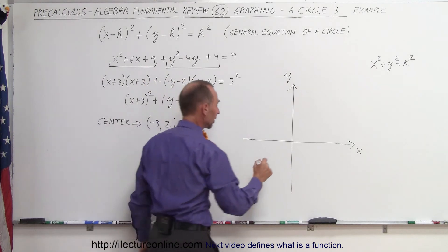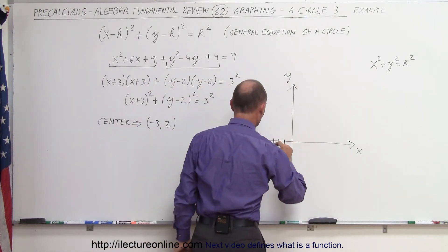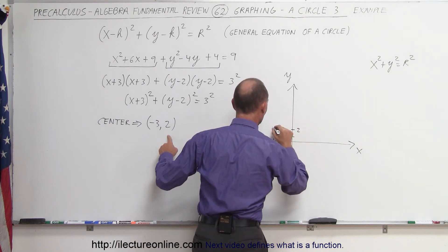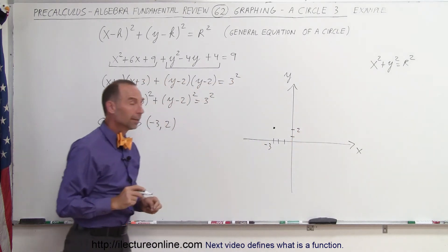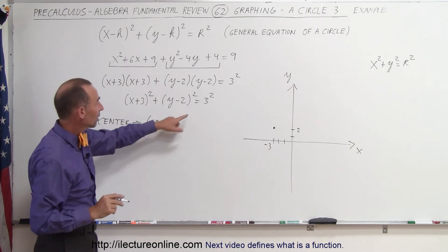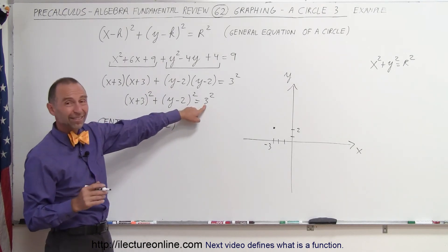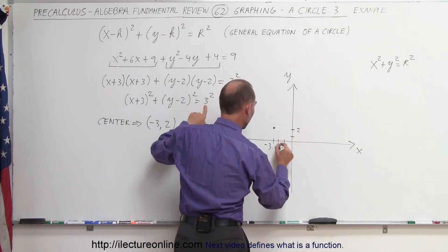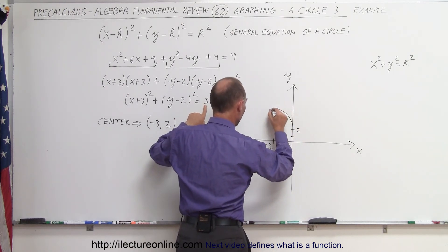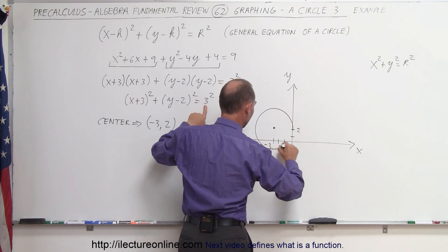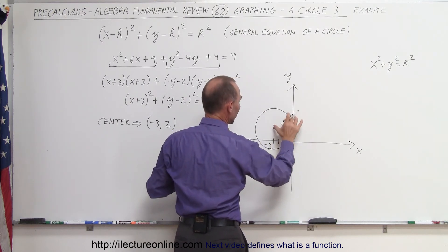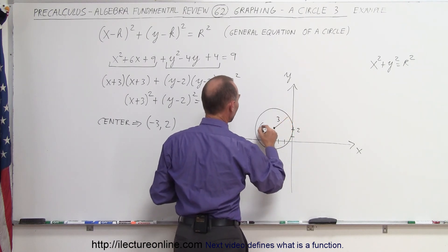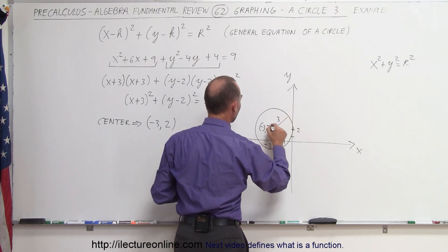x equals negative 3 is 1, 2, 3 units to the left, and positive 2 in the y direction, so the center would be right there. Now the radius — r squared means r is 3, so the radius is 3. That means it extends 3 units in every direction, and the circle looks like this. Notice that the radius in any direction is 3, and the center is at (−3, 2).